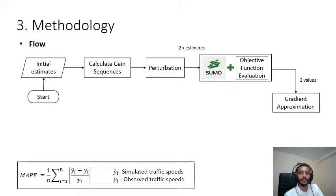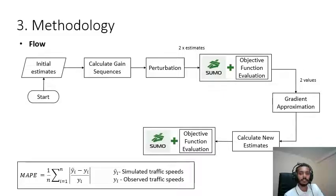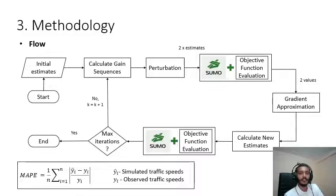We get two loss function values which will be used for gradient approximation, and based on that we calculate a new set of estimates which will be passed again into SUMO to evaluate the loss function value. If maximum iterations has been reached we stop the process, otherwise we continue the process until maximum iterations are reached.